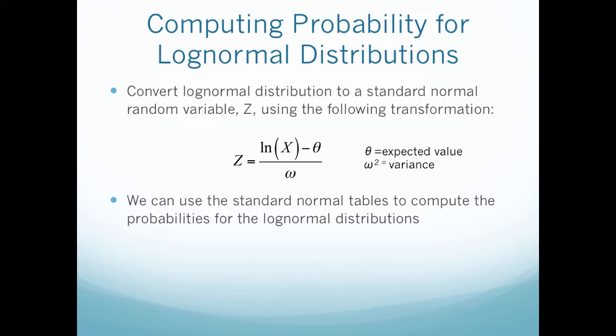We can use the standard normal tables to compute the probability for lognormal distributions. This formula is how I would calculate or approximate the tabulated values. The probability that z is less than natural log of x minus theta over omega equals phi of the same thing.